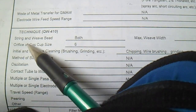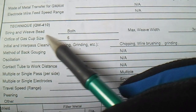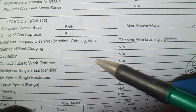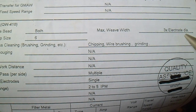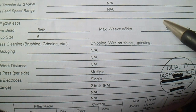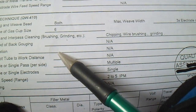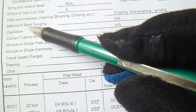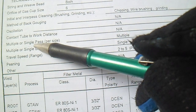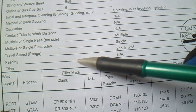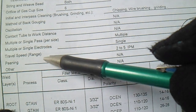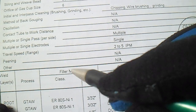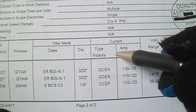The technique uses both string and weave beads. The orifice or gas cup size is 6, and the maximum weave width is 3 times the electrode diameter. The method of backing is NA. Pass type is single or multiple — they use single electrode. Travel speed is 2 to 5 IPM.